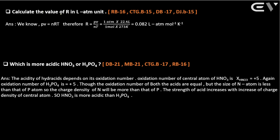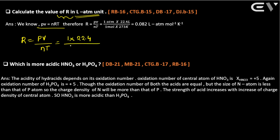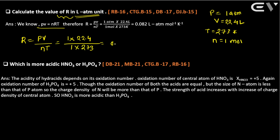Calculate the value of R. Using the formula R = PV/nT in liter-ATM units. At STP: pressure = 1 atm, volume = 22.4 liters, temperature = 273 Kelvin, n = 1. So R = (1 × 22.4) / (1 × 273) = 0.082 liter·atm/mol·K.